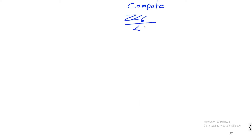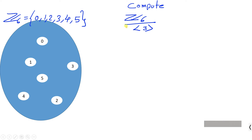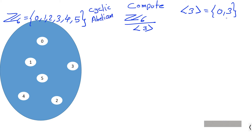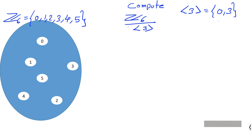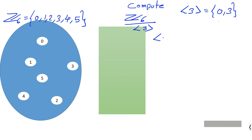Let us compute the factor group Z6 over the cyclic subgroup generated by 3. Z6 contains elements 0, 1, 2, 3, 4, and 5. The cyclic subgroup generated by 3 contains the elements 0 and 3. Since Z6 is cyclic it is abelian, and therefore this subgroup is a normal subgroup of Z6. The factor group consists of all cosets: {0, 3} forms one coset.